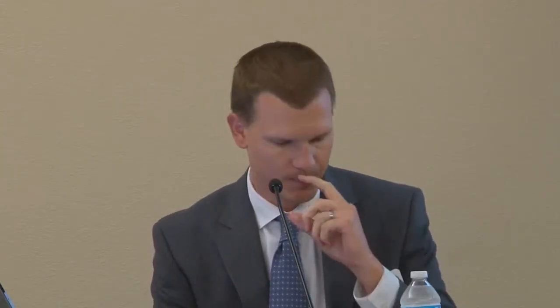The first scenario is a typical one we see often: a credit shelter trust where the entire family is not necessarily getting along. Setting the facts: Uncle Phil dies survived by his wife Vivian, his son Carlton, and his adopted son Will. Phil leaves a credit shelter trust that provides for discretionary distributions for health, education, maintenance, and support, and upon Vivian's death it splits into separate dynasty trusts for Carlton and Will.